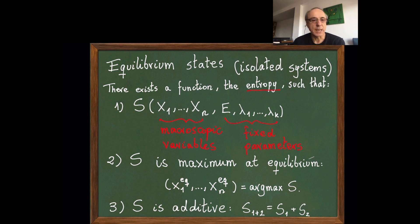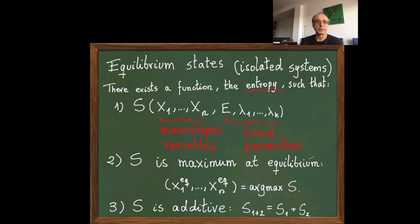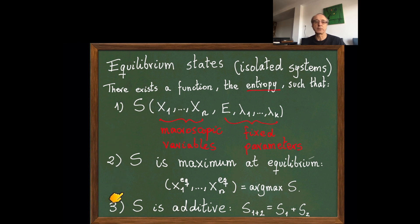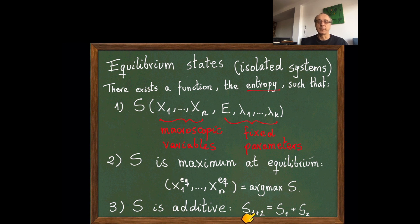The main assumption—the most basic assumption—is that the entropy is additive. If I have a system composed by two subsystems, one and two, the entropy of the global system is just the sum. This is true when you go to statistical mechanics and give a microscopic interpretation to entropy—it holds only if the systems are weakly coupled, meaning the interaction energy between the two systems is negligible compared with the energy of each system. This is the postulate that will give us a lot of information about the first problem of characterizing equilibrium.